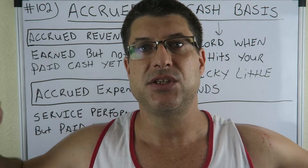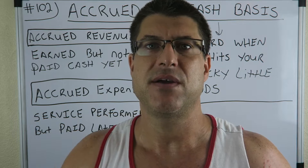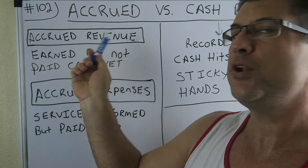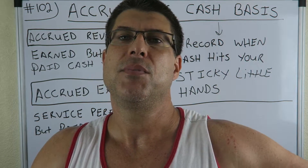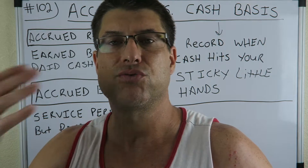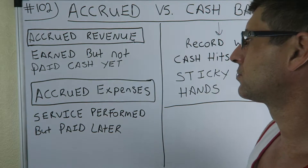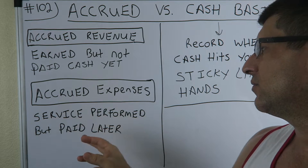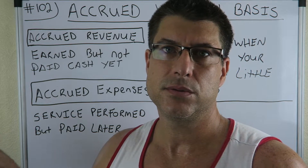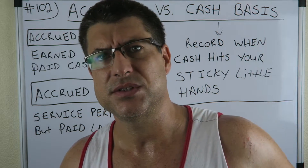When you have a big multi-million dollar business, it's called the matching principle — you want to match up your expenses and revenues. So you would do a journal entry recording your revenue, but not the cash you received yet, because you didn't get the money. For an accrued expense, it means a service was performed but paid later — you record the expense now and record the payment later.